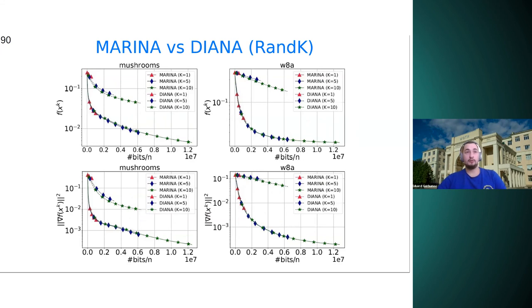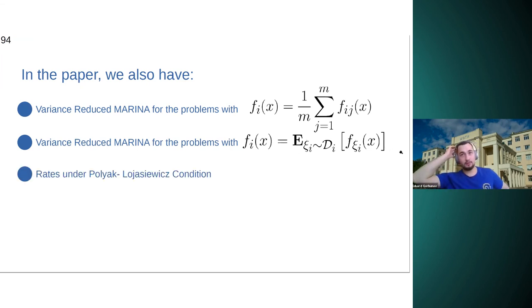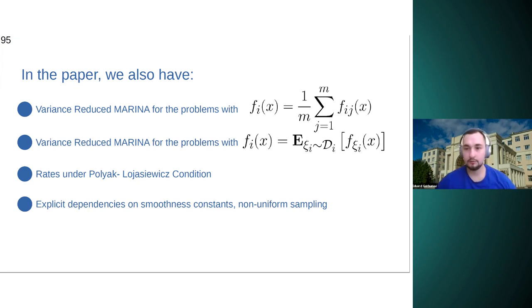In conclusion, I would like to say that in the paper, we also have variance reduced version of Marina for finite sum problems when each client has finite sum. Also, we derive rates under Polyak-Lojasiewicz condition. And also we have, I forgot to mention this in the slide, but we also have Marina with partial participation of clients. And also in the paper, you can find explicit dependencies on smoothness constants and non-uniform sampling. And what is important, our proofs are simple. And the results are strictly better than previous known results. So thank you for your attention. Now, I'll be happy to answer your questions.